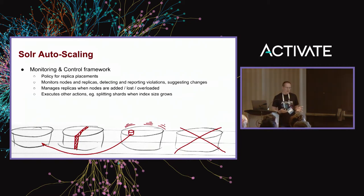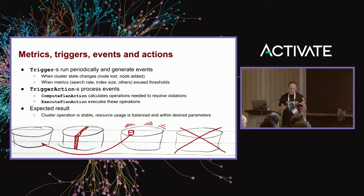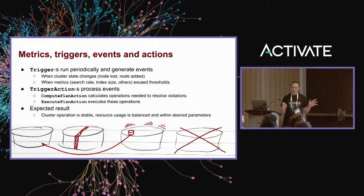Autoscaling can also execute other actions such as splitting shards if their size is too large, or in the near future, merging shards if their size is too small. To perform all of that, there are several components involved. The main component is a trigger definition, and there are several types of triggers. Each reacts to a different type of event — for example, node lost, node added, search rate exceeded, or any other arbitrary metrics value exceeded.